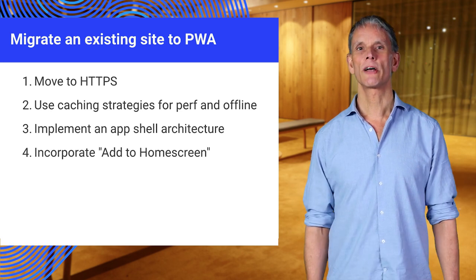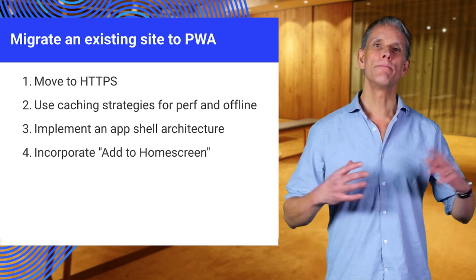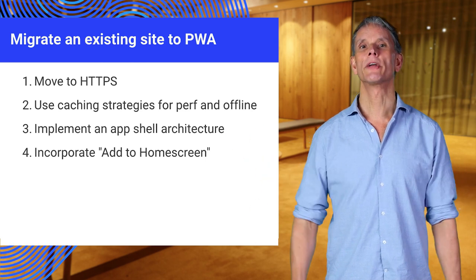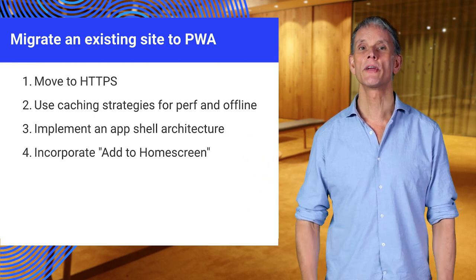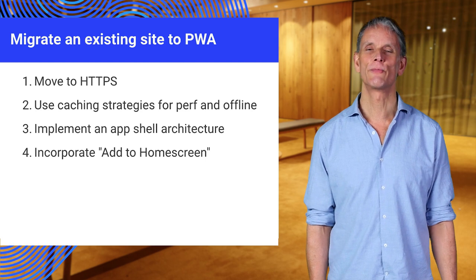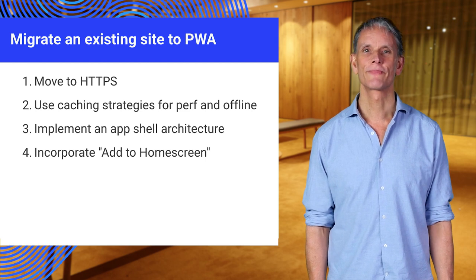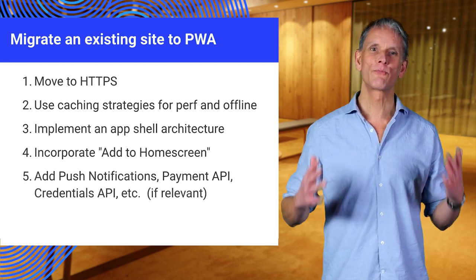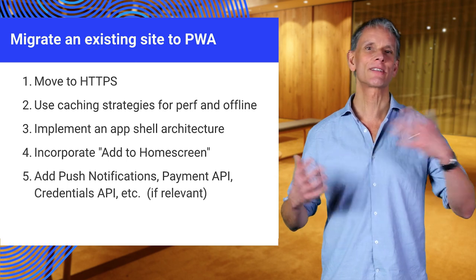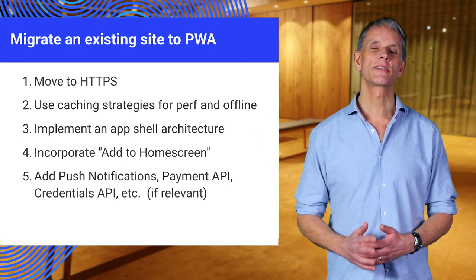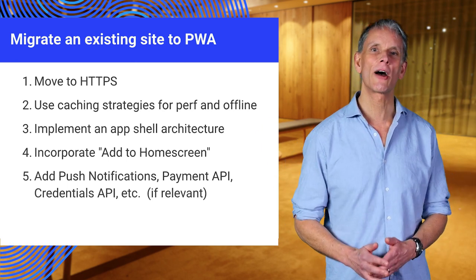Once you have an app shell, adding a manifest file and meta tags enables add to home screen. Adding an icon to the home screen makes it easier for users to return to your web experience. Finally, you can enhance your app with features such as push notifications, integrated payments, and automated login. These are built on the same underlying framework that enables PWAs.